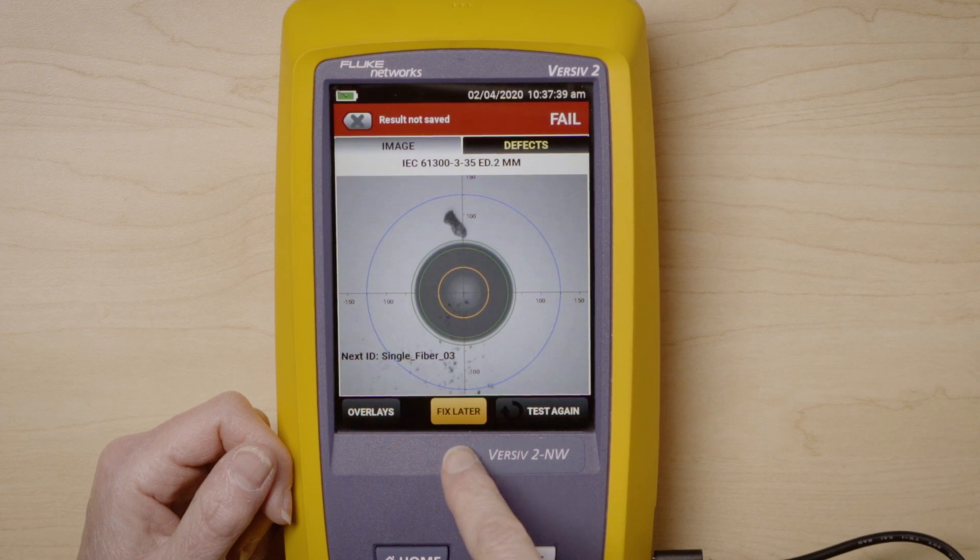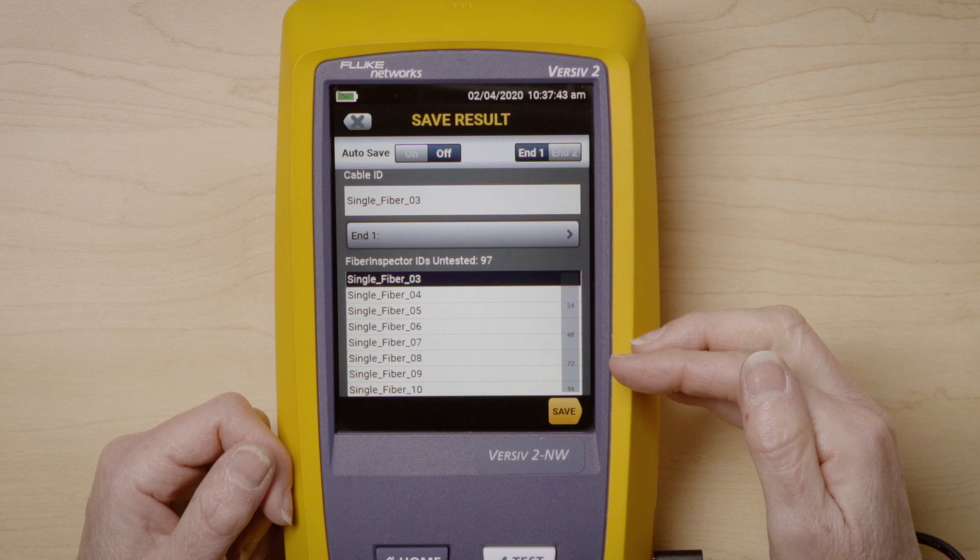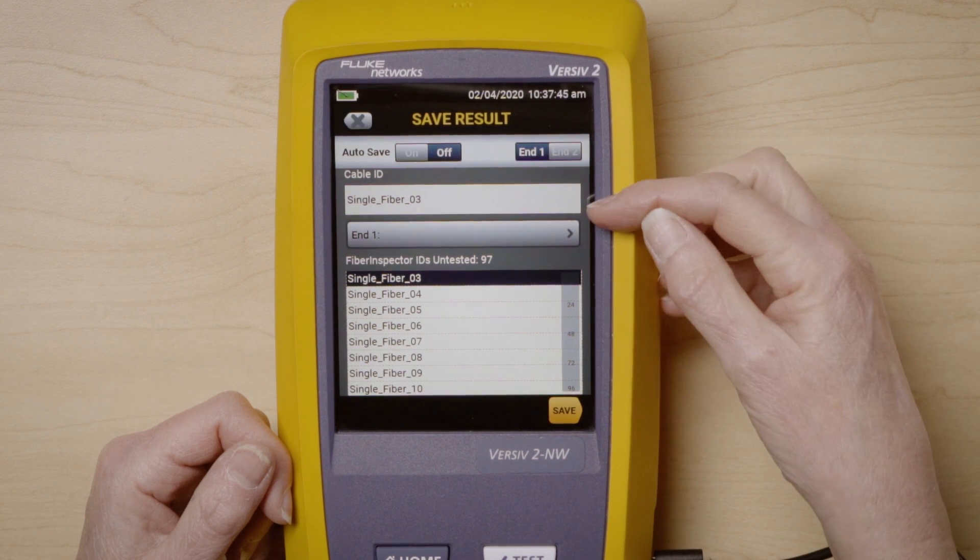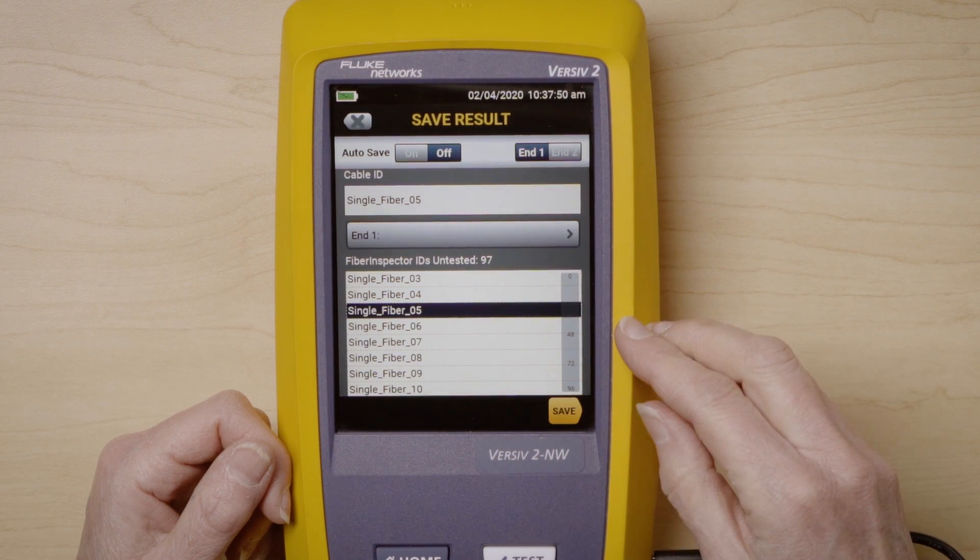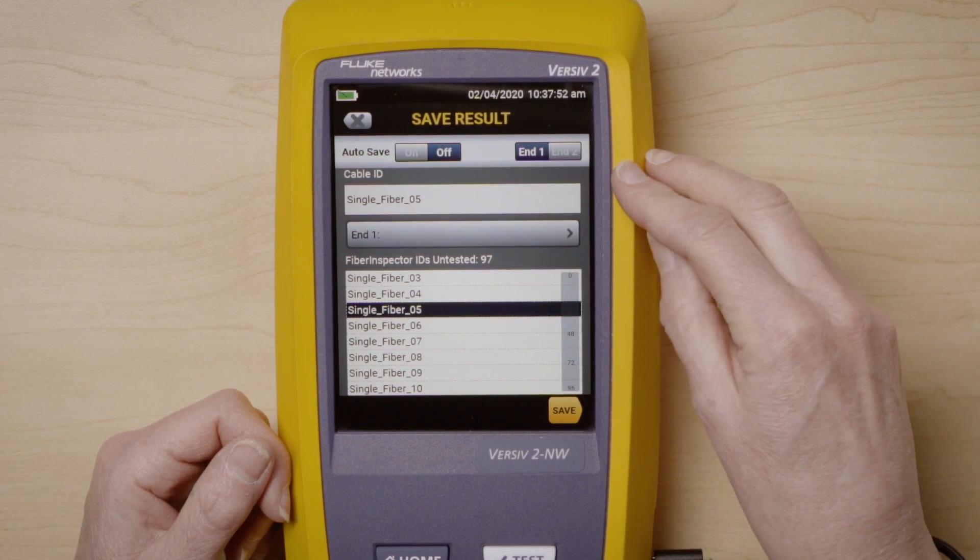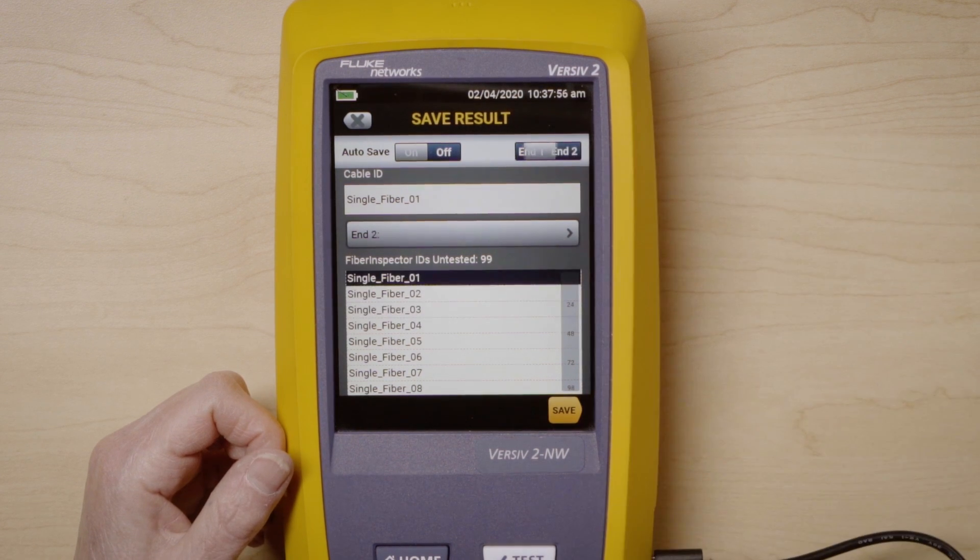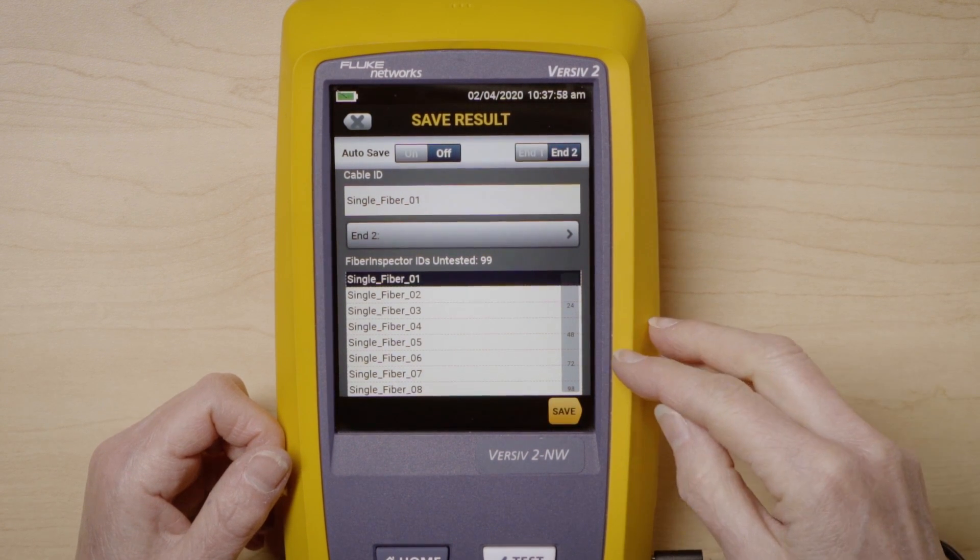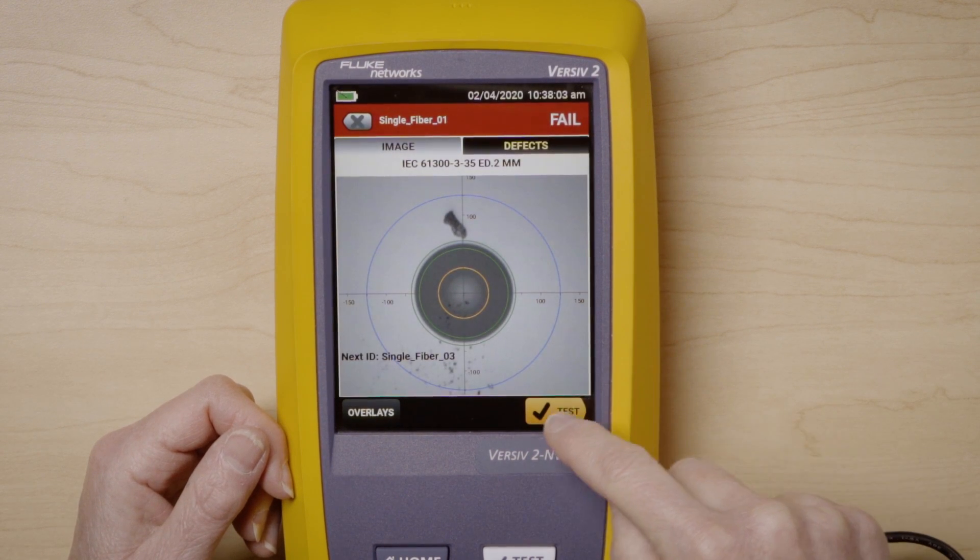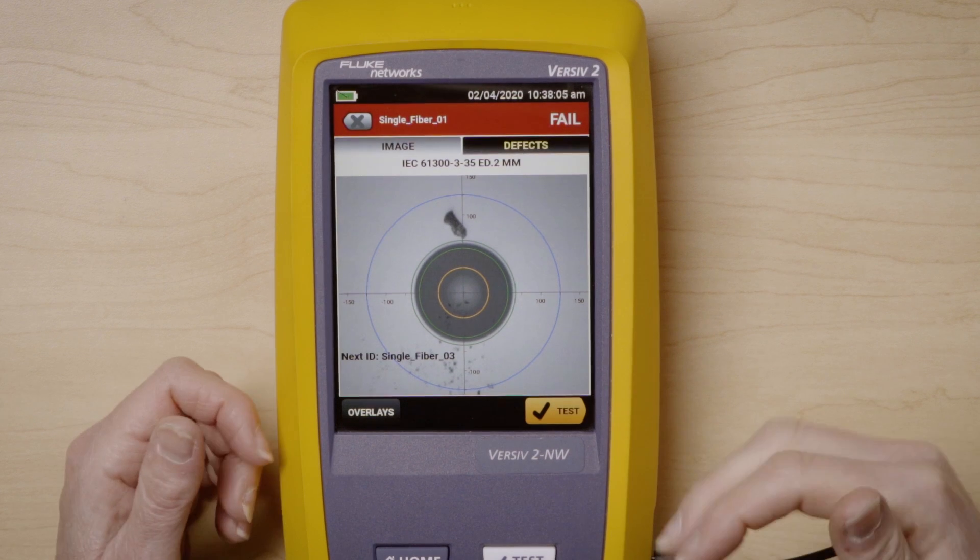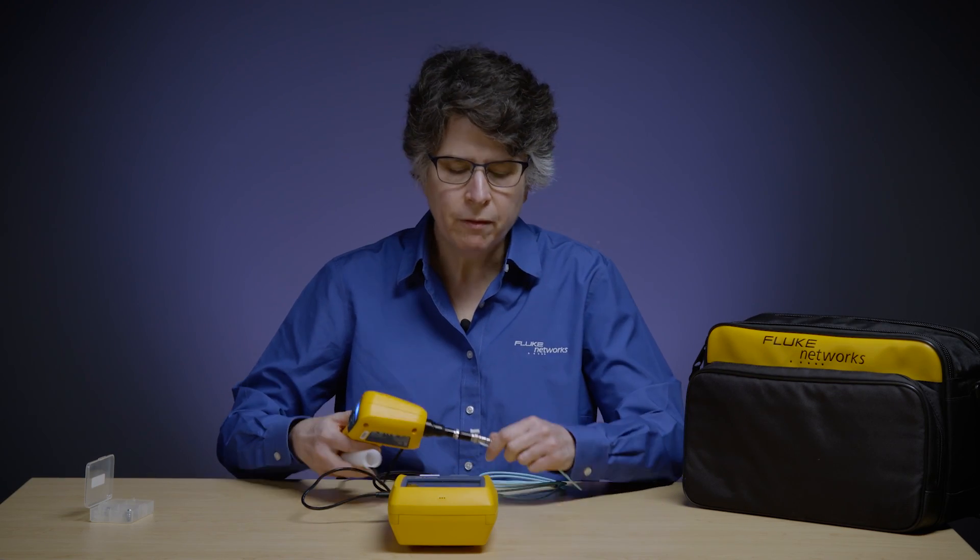So another nice feature is we also have the button fixed later. When I do this, this lets me save my image. So right now it came up with a next cable ID, which is 03. If I wanted to go to 05, I can. And I can also change the end. Is this end one or end two of the fiber? If I wanted it end two, I would just press end two and now I can go ahead and save. Or if I wanted to test again, I can just press test and test again. And so now we've just finished. We have saved the image.